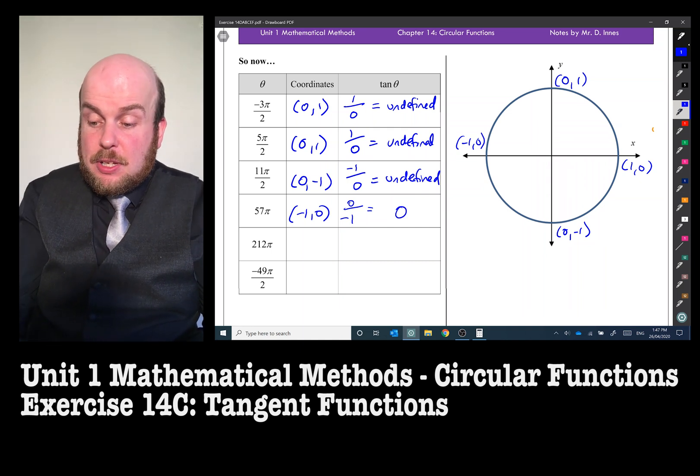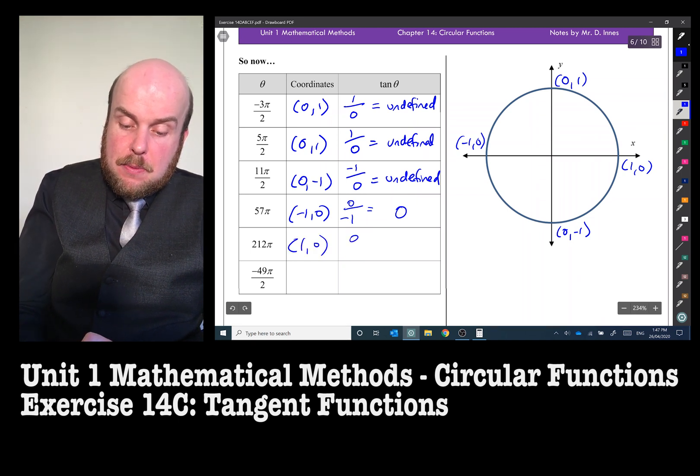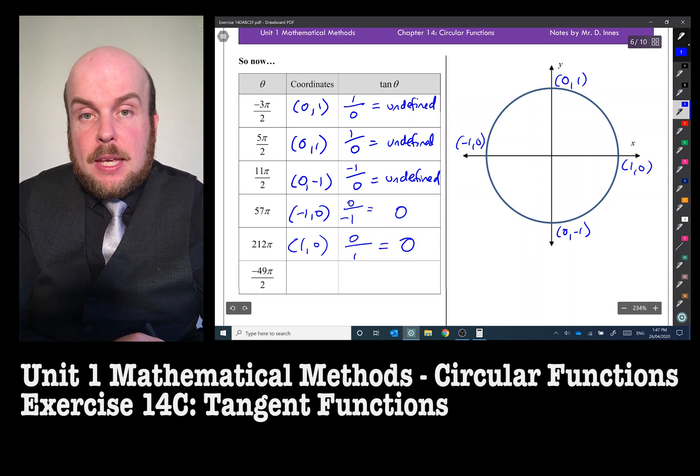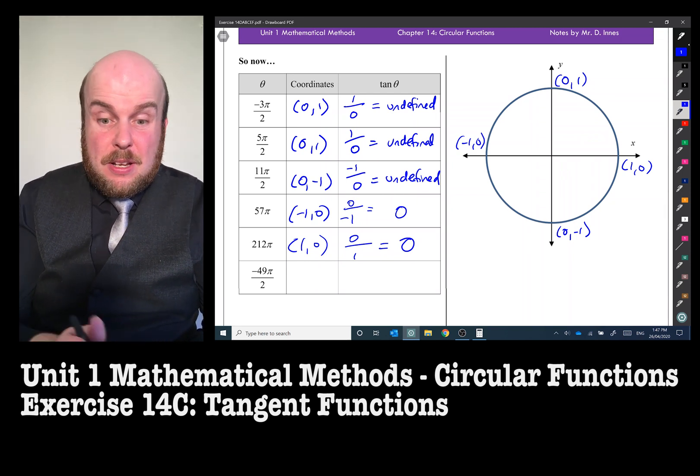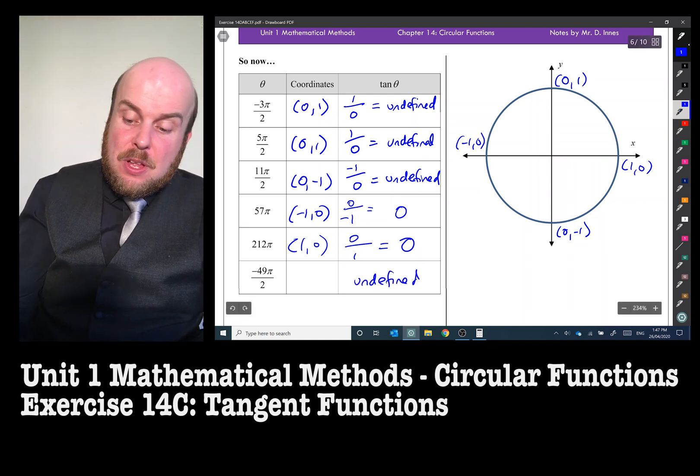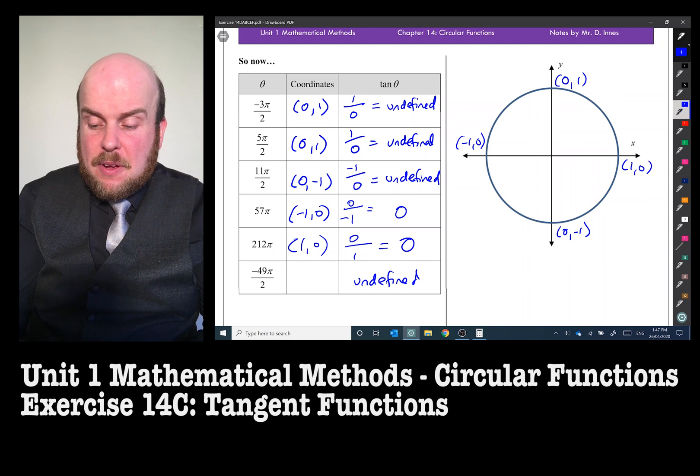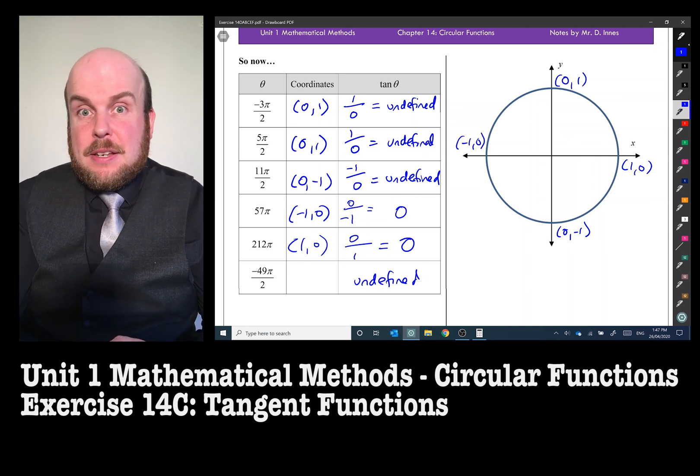212π, that's going to be on the right. So that's going to be 1, 0 coordinates. So 0 divided by 1, which is also 0. Can you hazard a guess at negative 49π/2? Yeah, well it's going to be undefined. Because even though we're going backwards, and in fact it will still be at the bottom here, it will still be undefined.